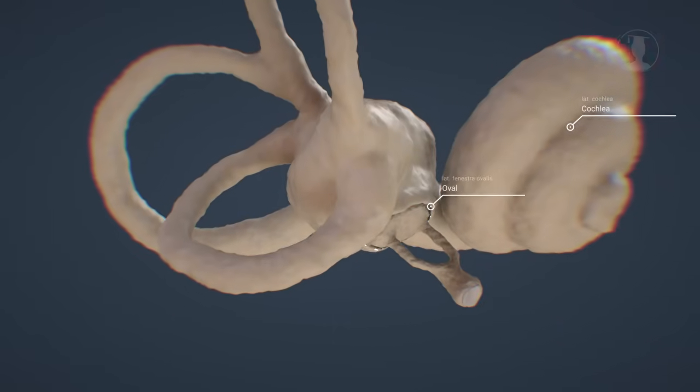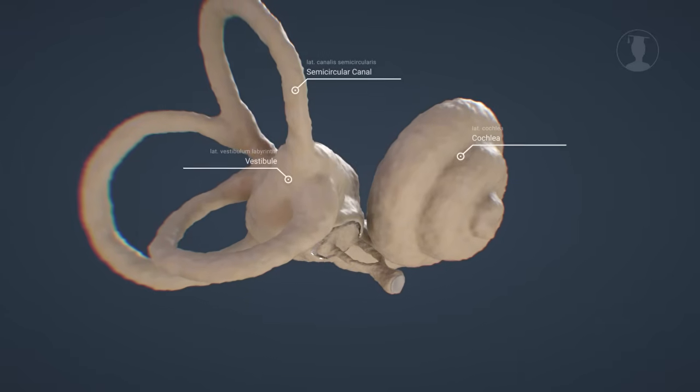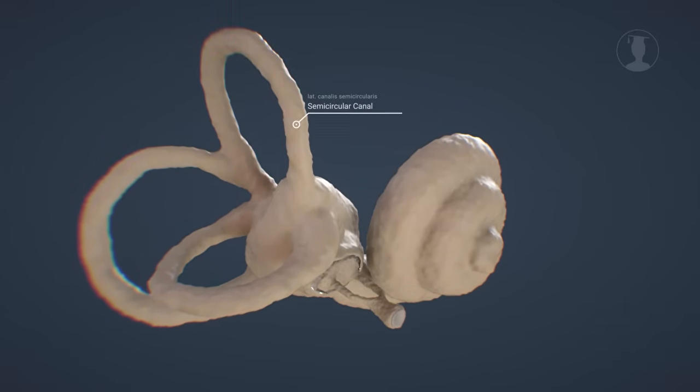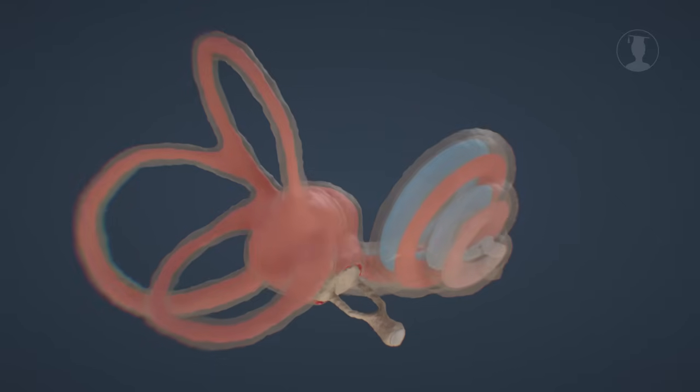The cochlea, vestibule, and semicircular canals are part of the bony labyrinth. The three semicircular canals are responsible for our sense of balance, which we will get to know in more detail in the second part. We hear with the help of the cochlea.